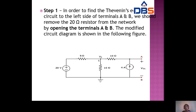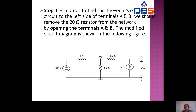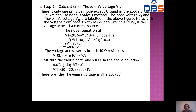Applying nodal analysis: (V1 − 20)/5 + V1/10 − 4 = 0. This gives 3V1 − 80 = 0, so V1 = 80/3 volts. The voltage across the 10-ohm resistor V10 = −4 × 10 = −40 volts. Applying KVL: Vth = 80/3 − 40 = 200/3 volts.